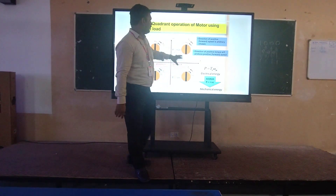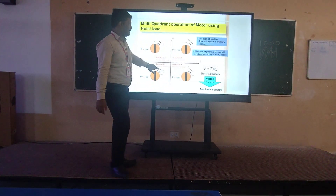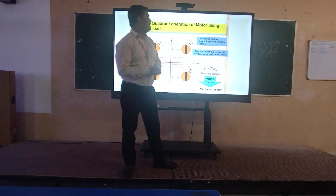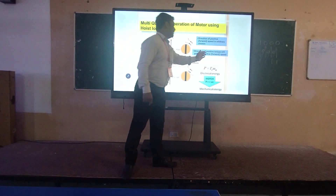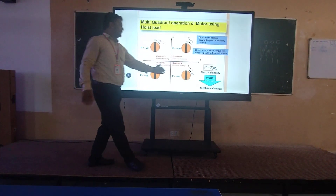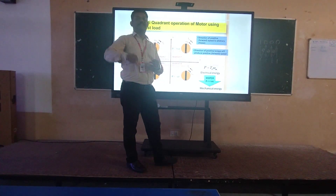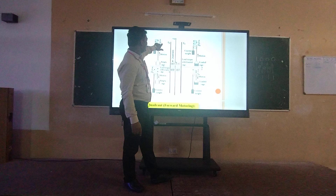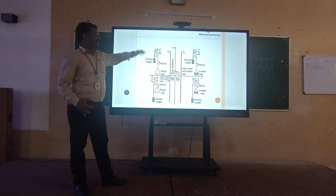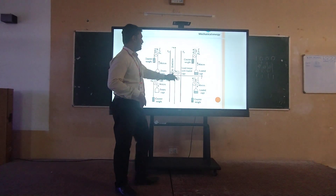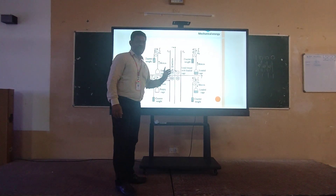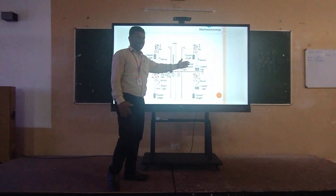How easy is that? The four-quadrant operation can be summarized in one diagram. This is the diagram showing four regions — one, two, three, four — representing the four modes of operation of the DC motor, covering forward motoring, forward braking, reverse motoring, and reverse braking in the torque-speed plane.